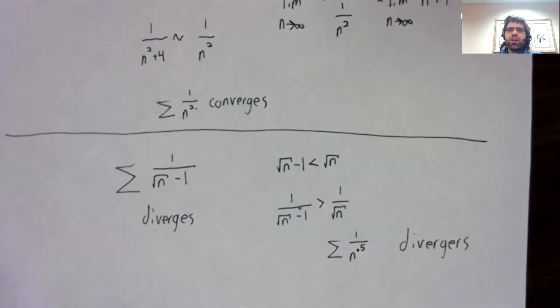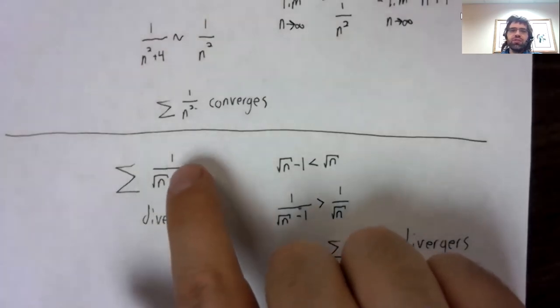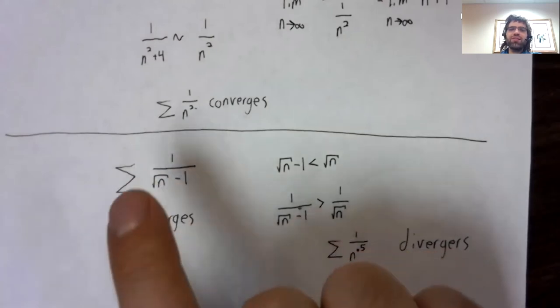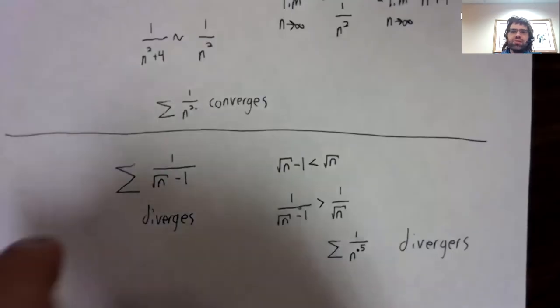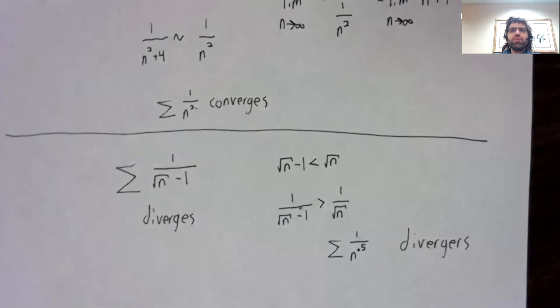And there are other things you could try. I don't know how well all of them would work. You could try the limit comparison test. You could say that you think this looks like this, and then try to formalize it using that test. This is just the first thing that leapt out to me.